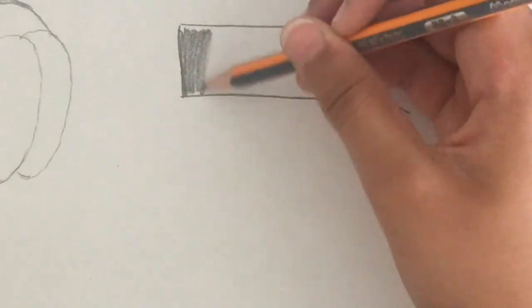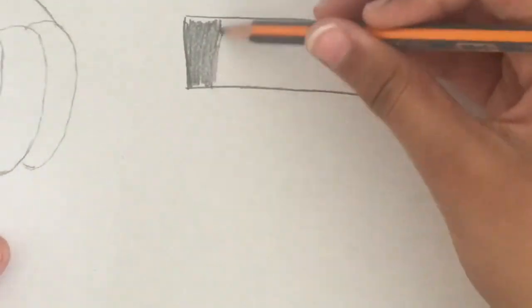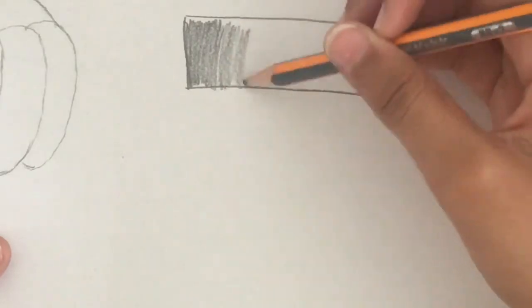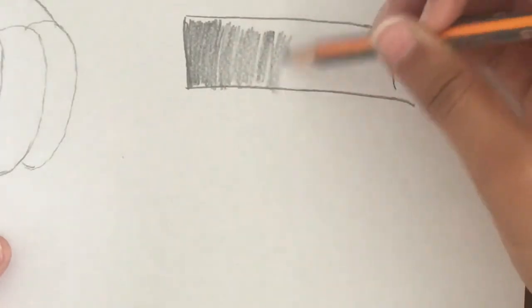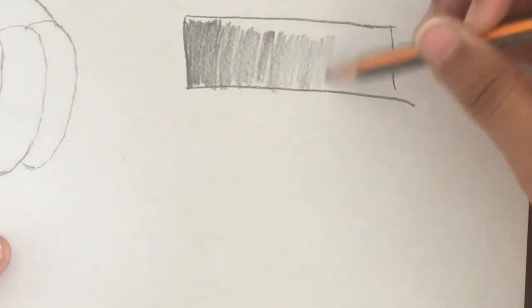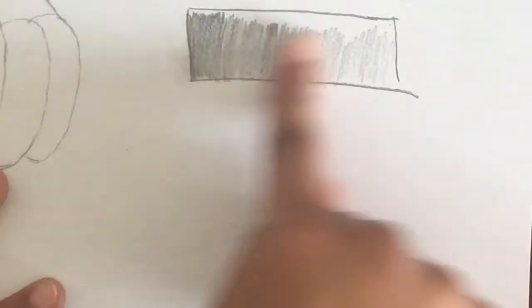You just go dark, and then you get lighter. Add less and less pressure to your pencil, and that will do the trick.